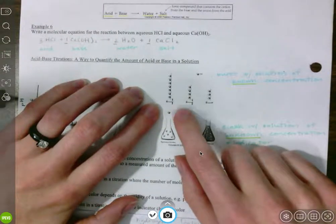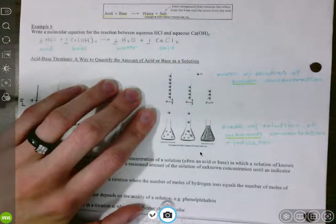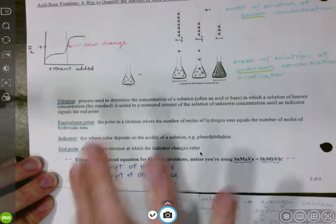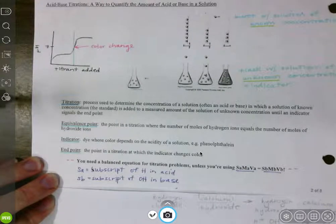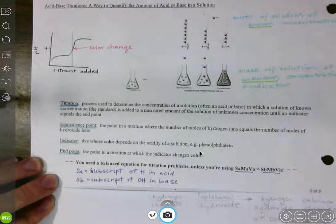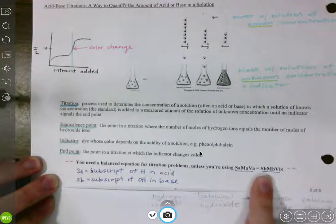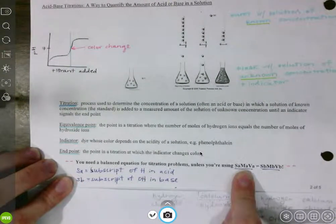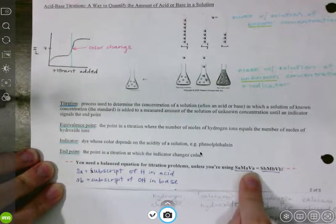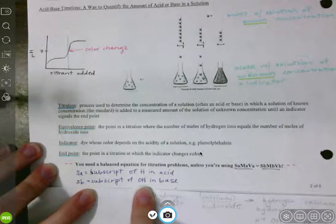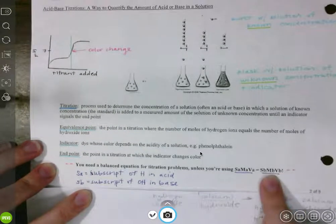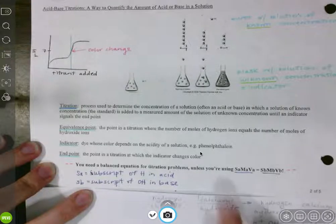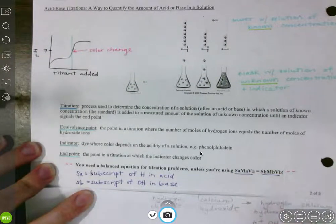I would suggest watching the video on Canvas about acid-base titrations. We're going to be doing titration problems now. We need a balanced chemical equation for these titration problems because we're going from one substance to another substance, so we need to go through moles — unless we are using SA·MA·VA = SB·MB·VB. SA is the subscript of hydrogen in our acid, MA is the molarity of our acid, VA is the volume of our acid, SB is the subscript of hydroxide in our base — so how many hydroxide ions we have in our base — MB is the molarity of our base, and VB is the volume of our base. We need to know all of these except for one.